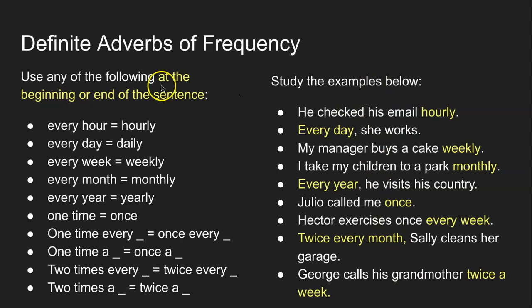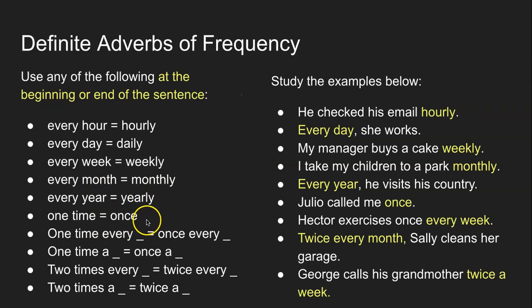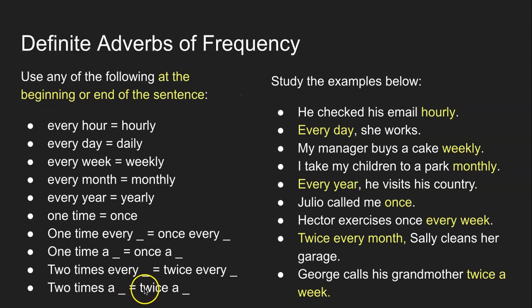It's important to know that definite adverbs of frequency can be used at the beginning or at the end of the sentence — it's your choice. Some adverbs of frequency have the same meaning but different forms. For example: every hour / hourly, every day / daily, every week / weekly, every month / monthly, every year / yearly. You can also say: one time / once, once a week / one time a week, twice every day / two times every day, twice a month / two times a month. You can use week, month, or year as needed.